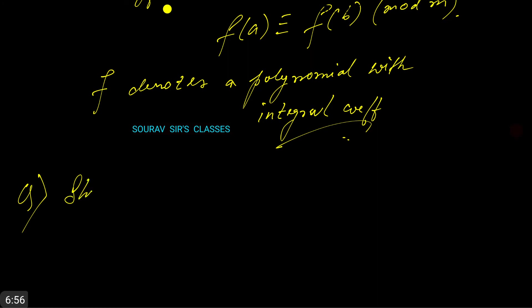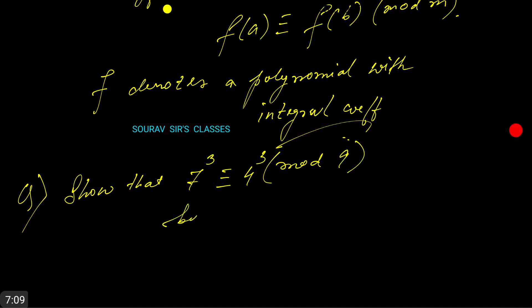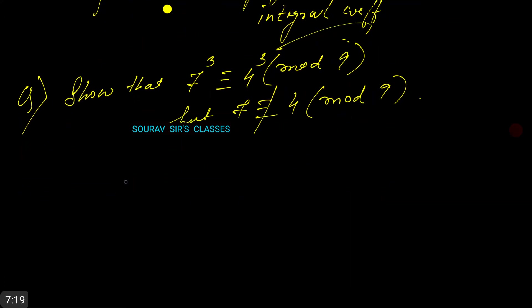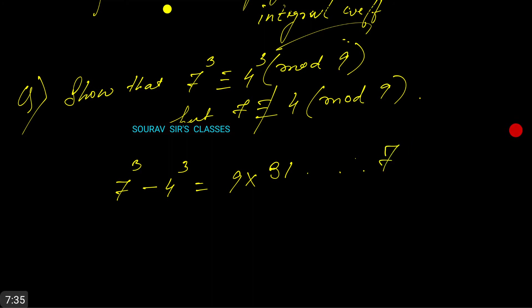Show that 7³ ≡ 4³ (mod 9), but 7 ≢ 4 (mod 9). We write that 7³ − 4³ = 9 × 31. Therefore, 7³ ≡ 4³ (mod 9).